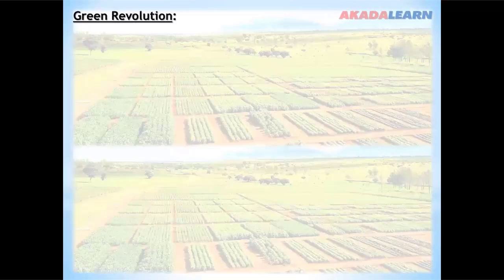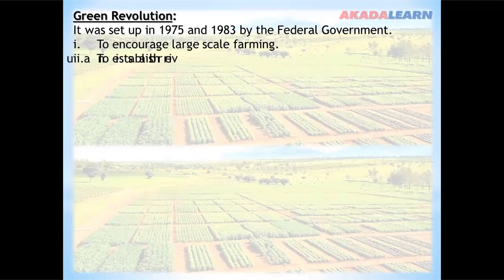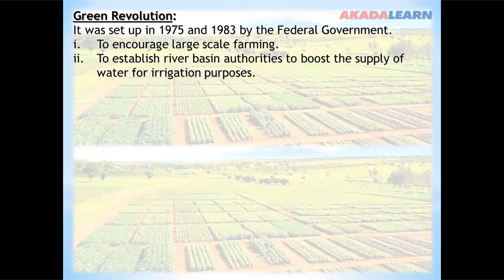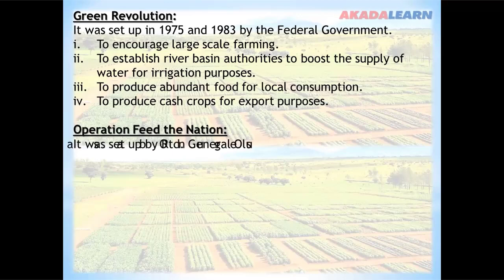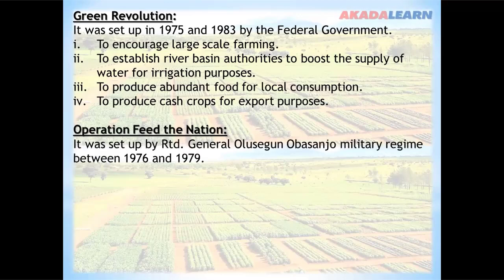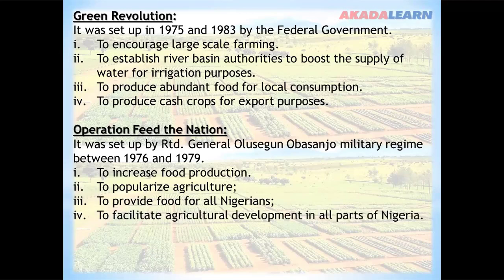Green Revolution was set up between 1975 and 1983 by the federal government. One of the aims is to encourage large-scale farming, to establish river basin authorities to boost the supply of water for irrigation purposes, to produce abundant food for local consumption, and to produce cash crops for export purposes. Operation Feed the Nation was set up by retired General Olusegun Obasanjo during the military regime between 1976 and 1979. Its purpose is to increase food production, to popularize agriculture, to provide food for all Nigerians, and to facilitate agricultural development in all parts of Nigeria.